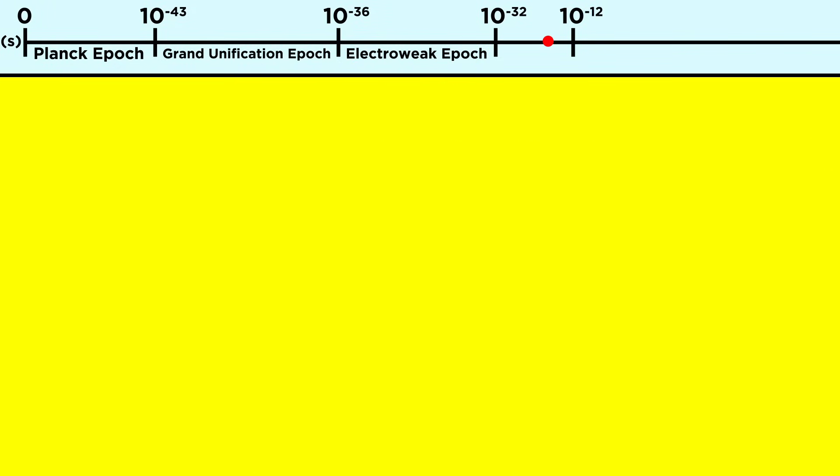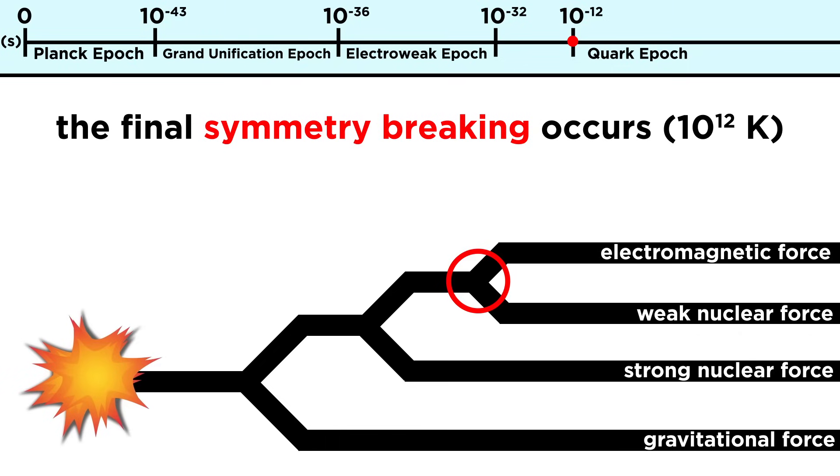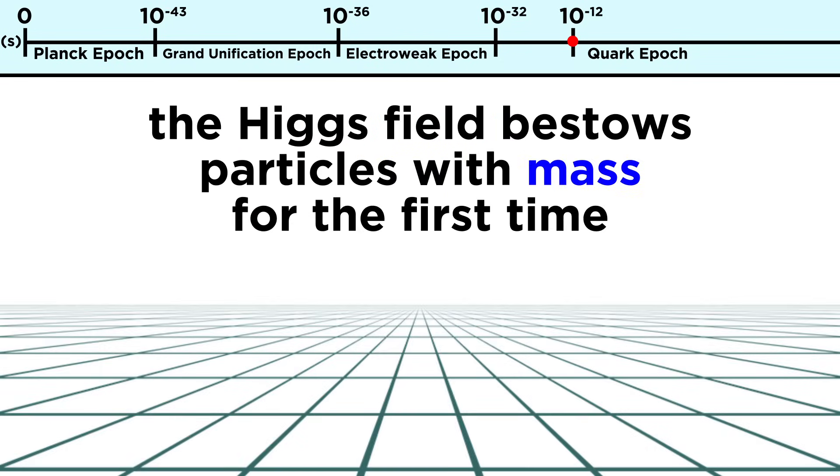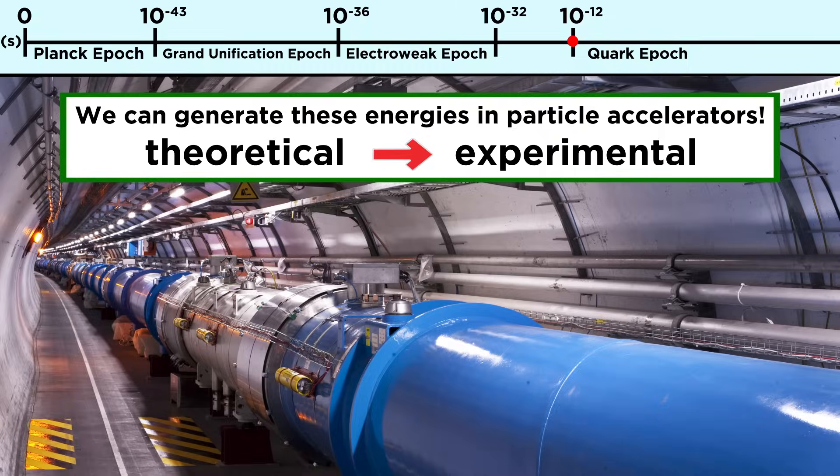Plotting along to around 10^-12 seconds, or one trillionth of a second after the Big Bang, we enter a period called the quark epoch. Here, things have cooled enough for the third and final symmetry to break, decoupling the electromagnetic and weak nuclear forces, thus resulting in the four distinct forces we know today. As a result, the Higgs field bestows existing particles with mass for the first time, but things are still too hot for protons and neutrons to form. This is also the highest energy epoch that we can currently probe with particle accelerators, which means we are now transitioning from theoretical cosmology to experimental.